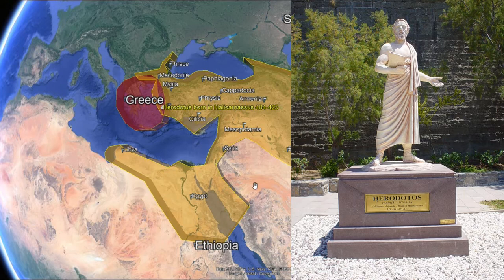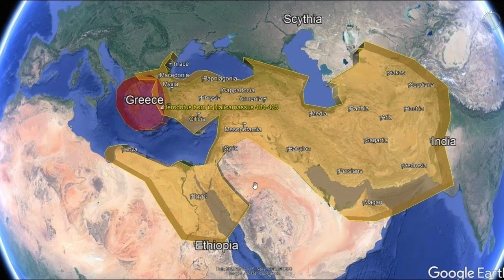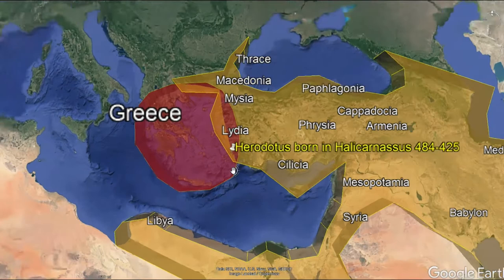He lived around 484 to 425 BC, which is about the end time of the Old Testament. He is working to understand his world, and he goes into the past. He goes down to the time of Hezekiah. He went through an interesting time of the Greco-Persian Wars, and let's look at his location on the map — I'll zoom in here.